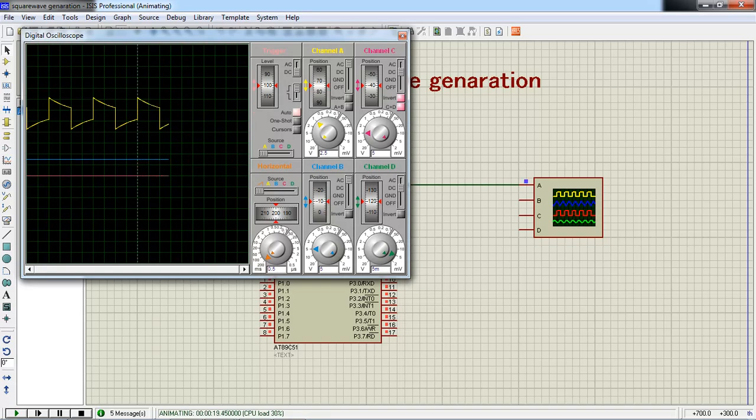This is a way to test your oscilloscope square wave generation output with digital oscilloscope in simulation. If you want to get your output with real hardware simply you can connect your oscilloscope channel with P2.0 pin from hardware.